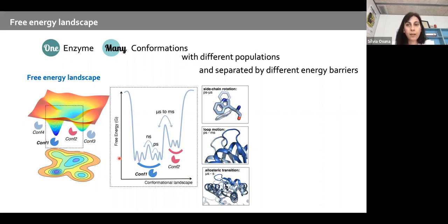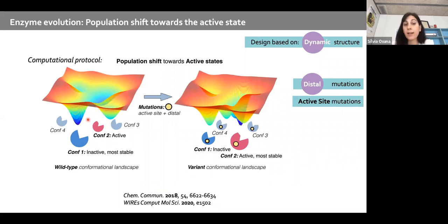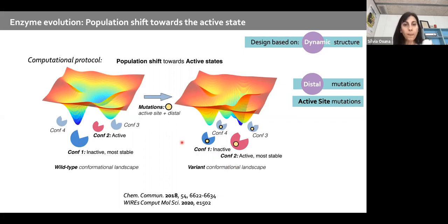We connect the free energy landscape concept with computational enzyme design by seeing enzyme design as a population shift problem. We reconstruct the conformational landscape of the wild-type enzyme and, if we want to stabilize a conformation that has promiscuous activity or better binding for a new substrate, we predict mutations — both in the active site and at distal positions — to stabilize that target conformation.